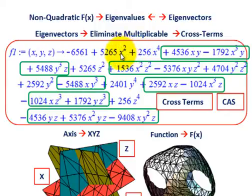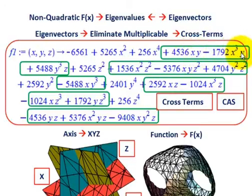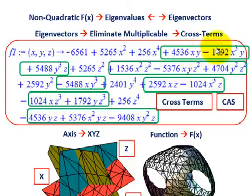These variables are going to be raised to different powers. I'm showing here a coefficient times x squared, a coefficient times x to the fourth, and then we've got all these cross terms. We've got a coefficient times x times y, then say we've got an x cubed times y, and so forth. We've got one y cubed times z as well.